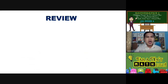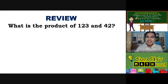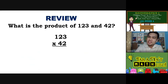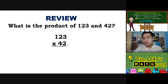Balikan natin. Do you know how to multiply whole numbers? For example, what is the product of 123 and 42? From the word product, the operation is multiplication. So, just multiply 123 times 42. Para tayong nagbabalik sa mga previous years — nung kayo ay nasa grade 4, grade 3, grade 2. There are so many ways to get the product of 123 and 42. You can use the partial product method. You can use the lattice method.